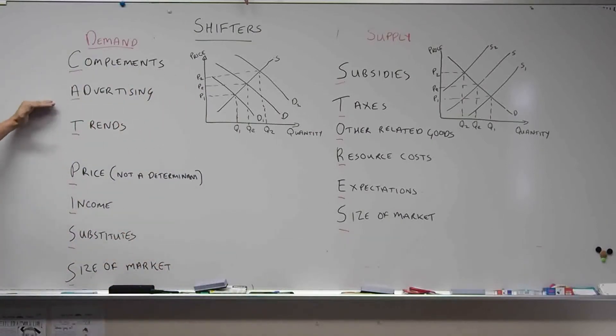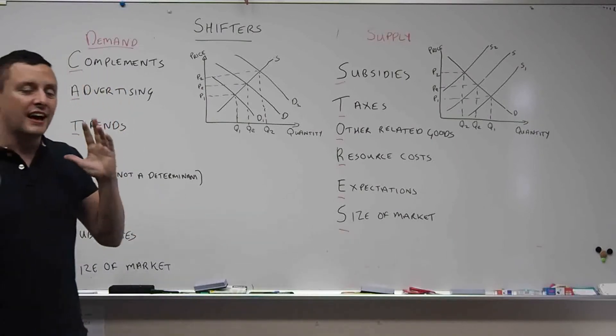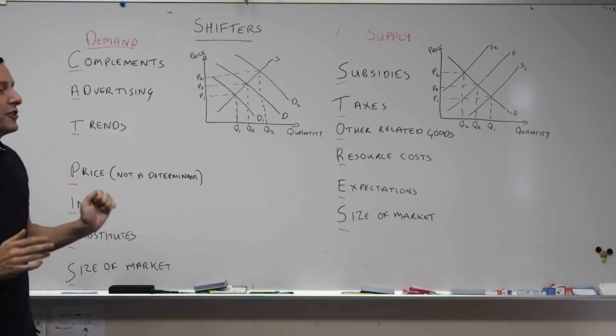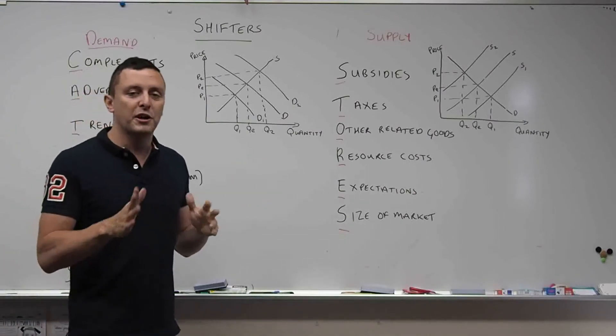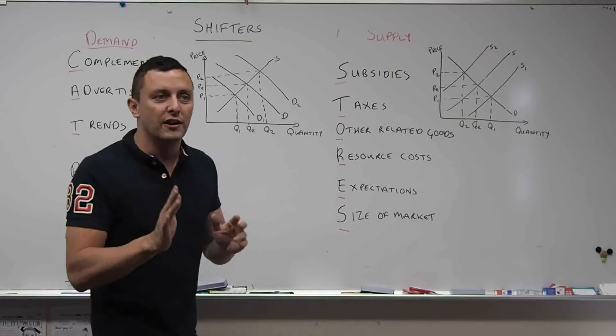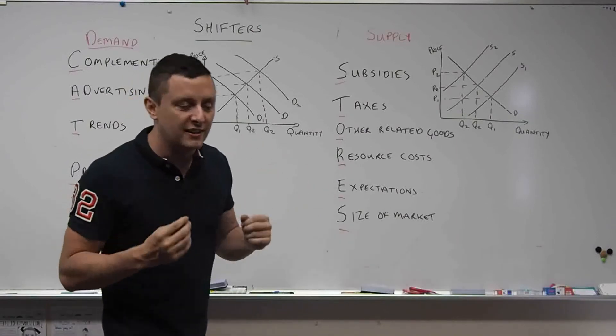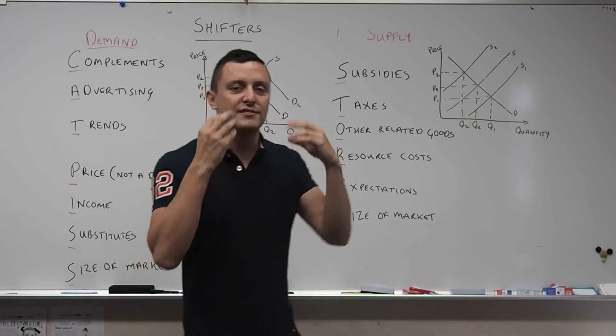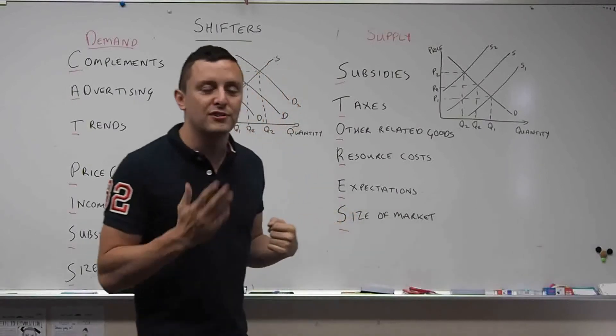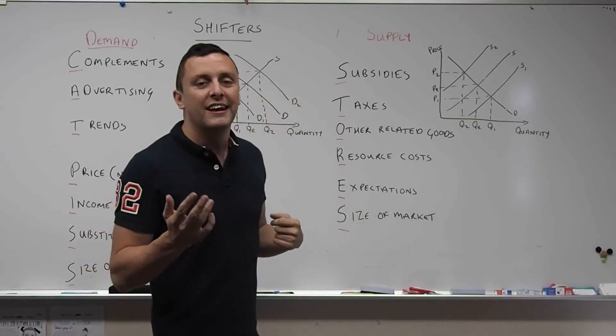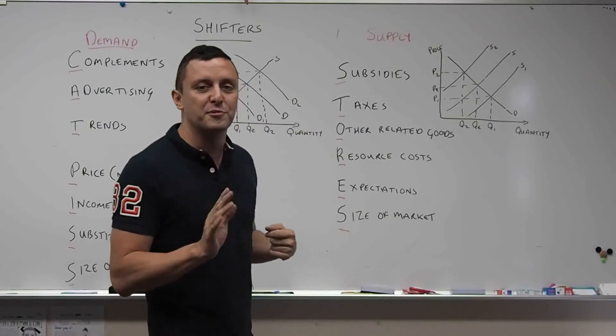The demand for hot dog sausages will shift from D to D2 just by decreasing the price of hot dog buns. Next, A is for advertising. Now, of course, advertising is absolutely critical to increasing demand. If you look up now, Cristiano Ronaldo face exercises.